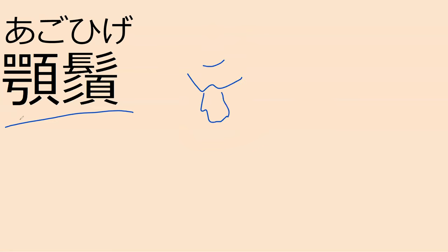顎 is 'chin.' The kanji for 顎 does look similar to 頭 (atama - head) — they share the same part, which is kind of nice. And 髭 also looks a lot like 髪 (kami - hair) — they've got the same top part. In our book they write 顎髭 in katakana, but this is not commonly written as katakana — normally you'll see 顎髭 just in hiragana.